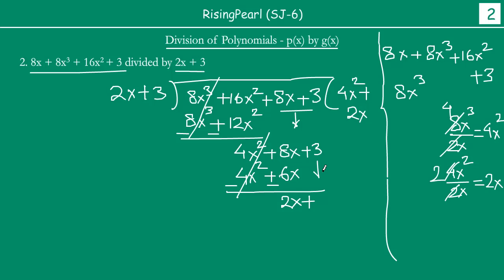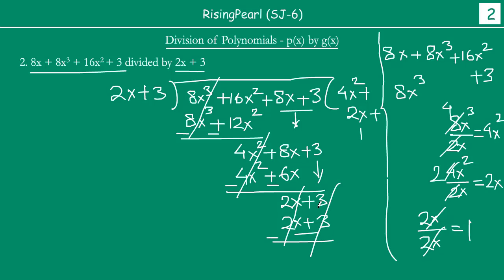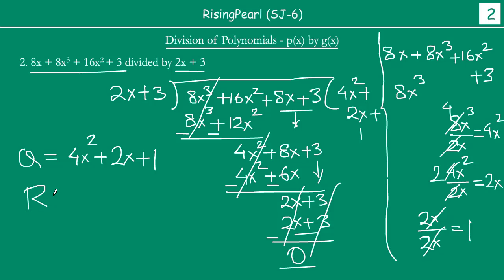Our new dividend is now 2x + 3. We divide 2x by the first term of the divisor, 2x, and we get 1. So we write plus 1. Then 1 × (2x + 3) = 2x + 3. We subtract — both terms cancel out and we have 0 as our remainder.